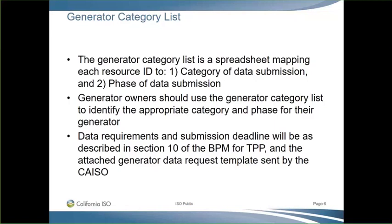Caller: My name is Chris. I just wanted to know, for the new generating resources it's 120 days after COD — once achieving COD, will the Cal ISO also be providing an email to the generator owner, as for the existing generating units? Or is this something we have to find on the Cal ISO website? Response: The process for requesting data is the same both for existing and new. We will be providing an email to the generator owner on commercial operation requesting the data we need, the same as how we do for existing generators.